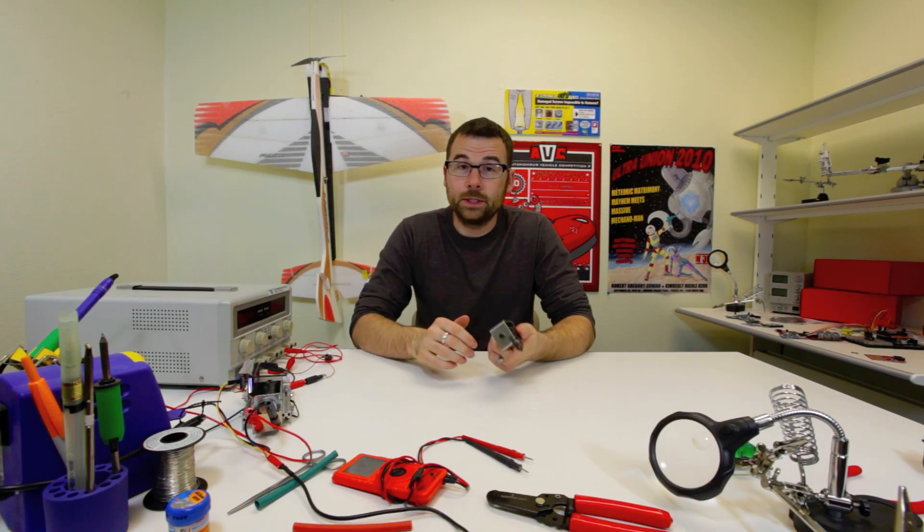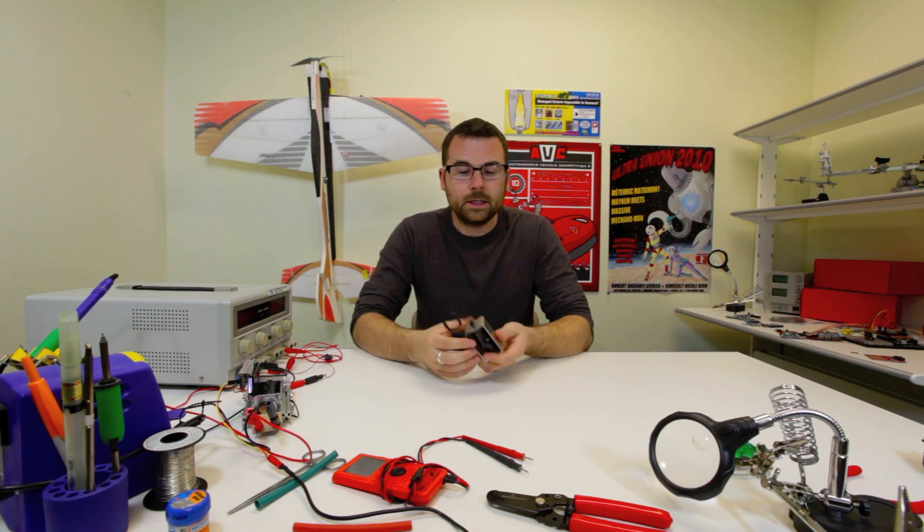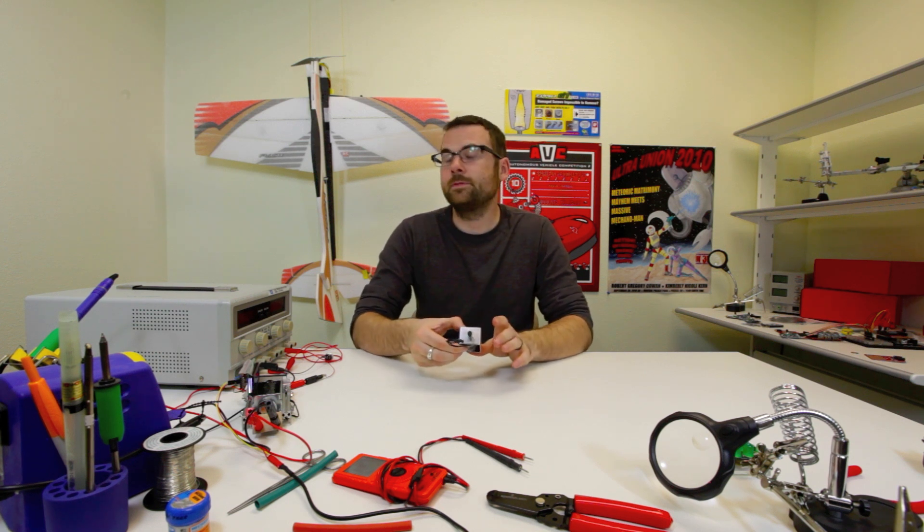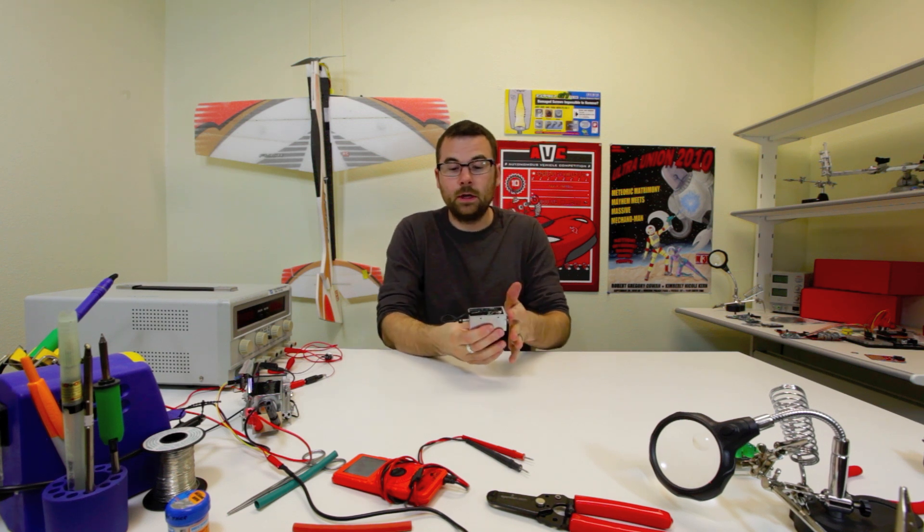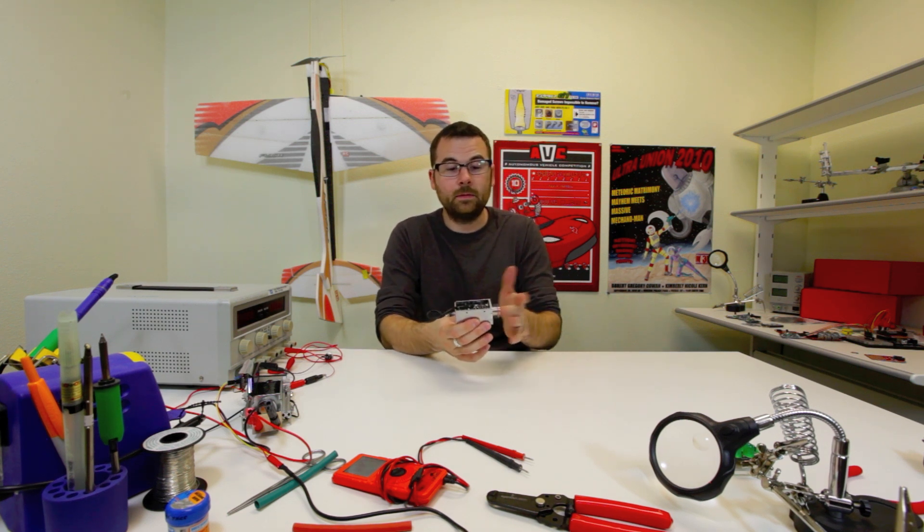Here we've got a heavy-duty solenoid. A solenoid is basically a motorized plunger. What you do is you hook this up to a voltage, apply voltage, and the plunger will spit out like that and then with the spring return back to the normal position.